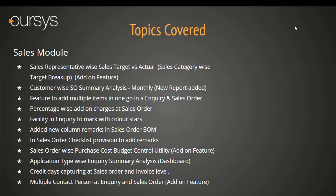Under the Sales module: Sales Representative-wise Sales Target vs Actual, Customer-wise SO Summary Analysis Report, Feature to Add Multiple Items in one go in an Inquiry and Quotation order level, Percentage-wise Add-on Charges at Sales Order level, Facility in Inquiry to Mark with Colors, Added New Column Remarks in Sales Order BOM level, In Sales Order Checklist provision to add Remarks, Sales Order-wise Purchase Cost Budget Control Utility, Application Type-wise Inquiry Summary Analysis, Credit Date Capturing at Sales Order and Invoice level, Multiple Contact Person at Inquiry and Sales Order level.